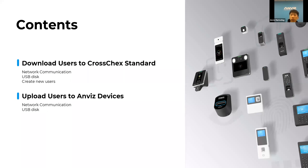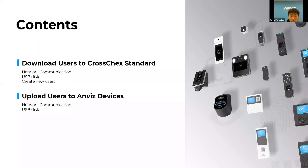Now let's go to today's main topics. The first topic is downloading users to Cross-Extended. The second is uploading users to the EMIS device. For downloading users, there are three different methods: using the network, using a USB drive, or creating new users.